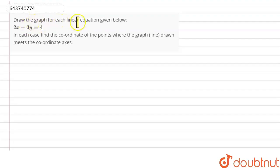Draw the graph for each linear equation, and our linear equation is 2x minus 3y is equal to 4. In each case, find the coordinate of the point where the graph line cuts the coordinate axes. Let's solve this question.